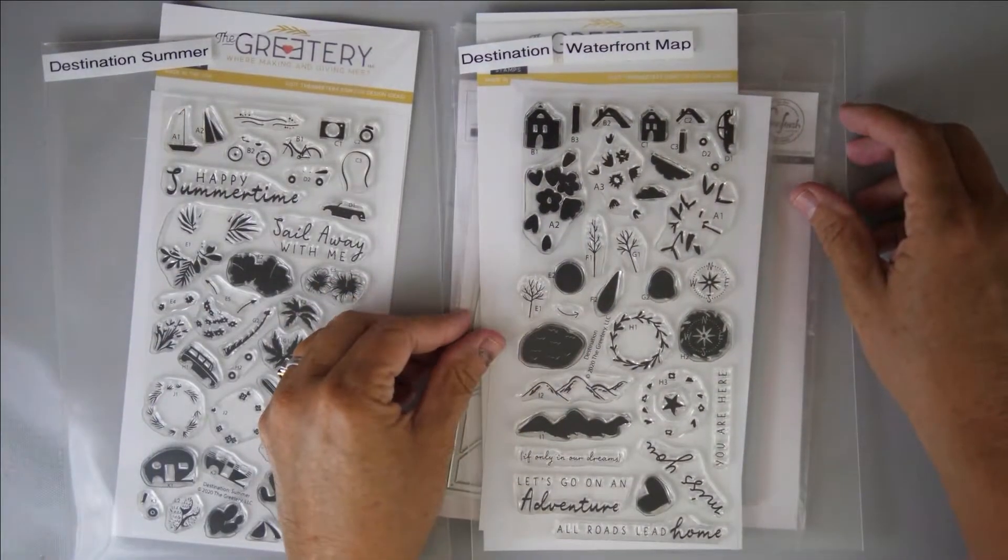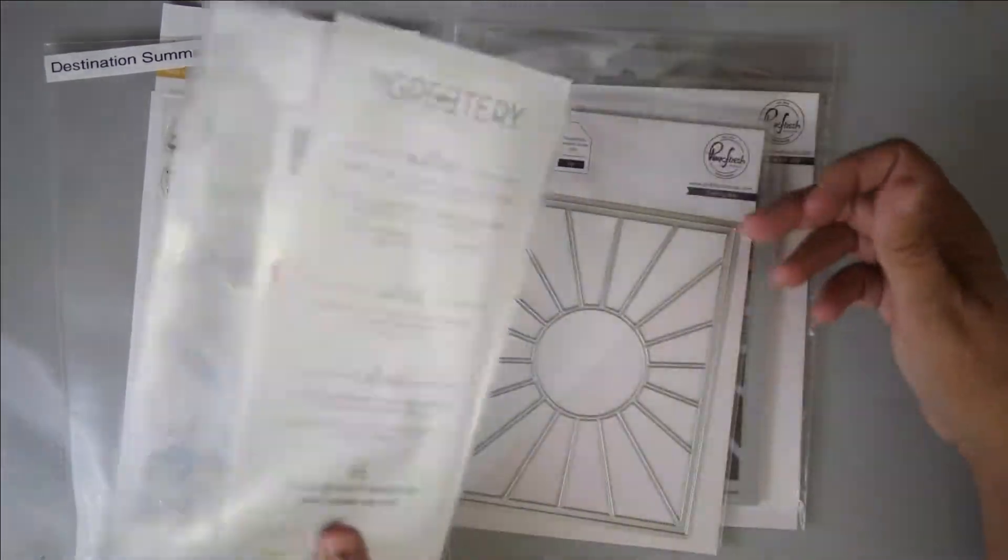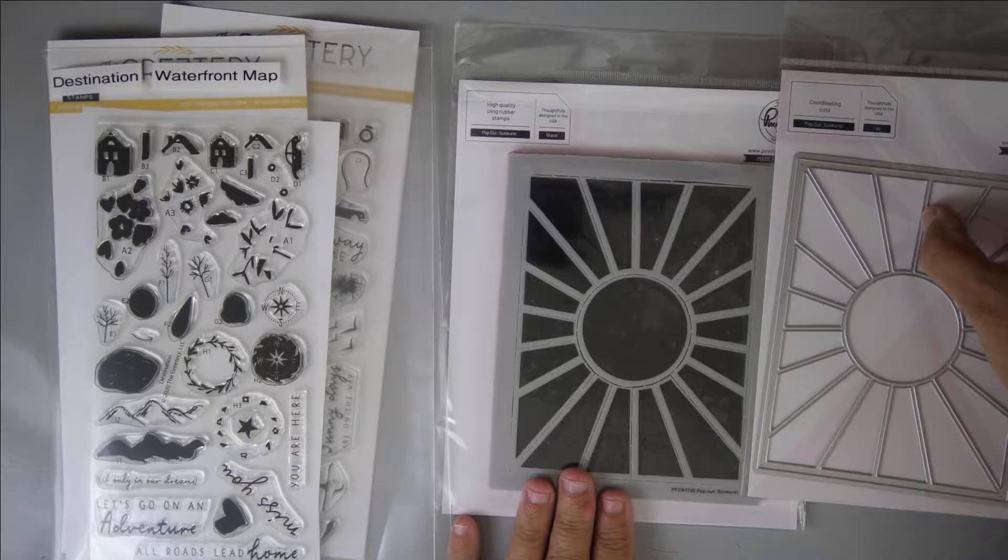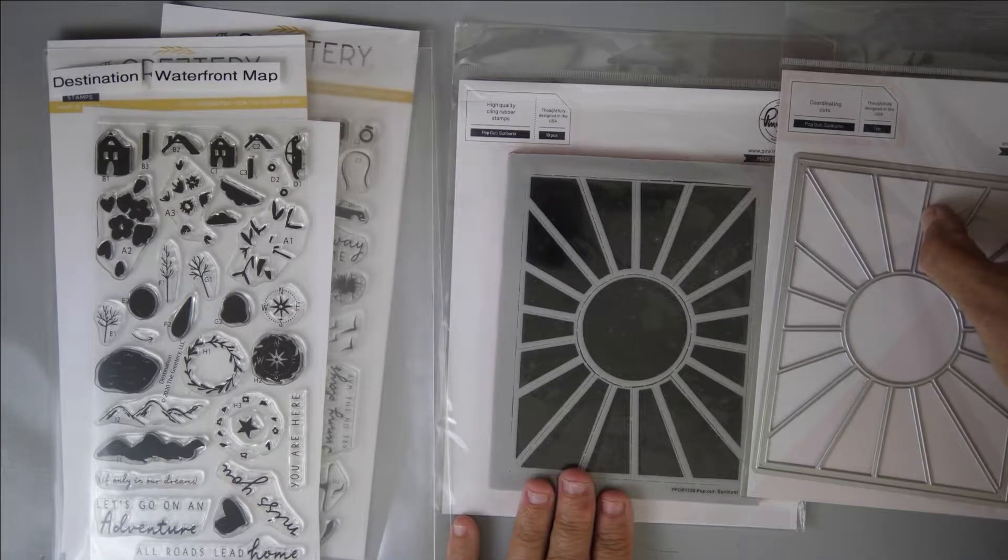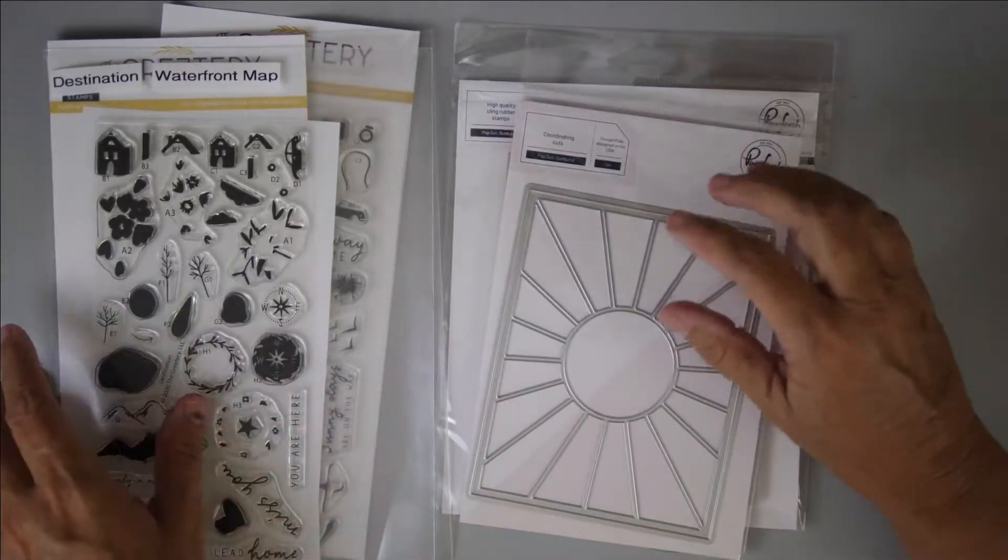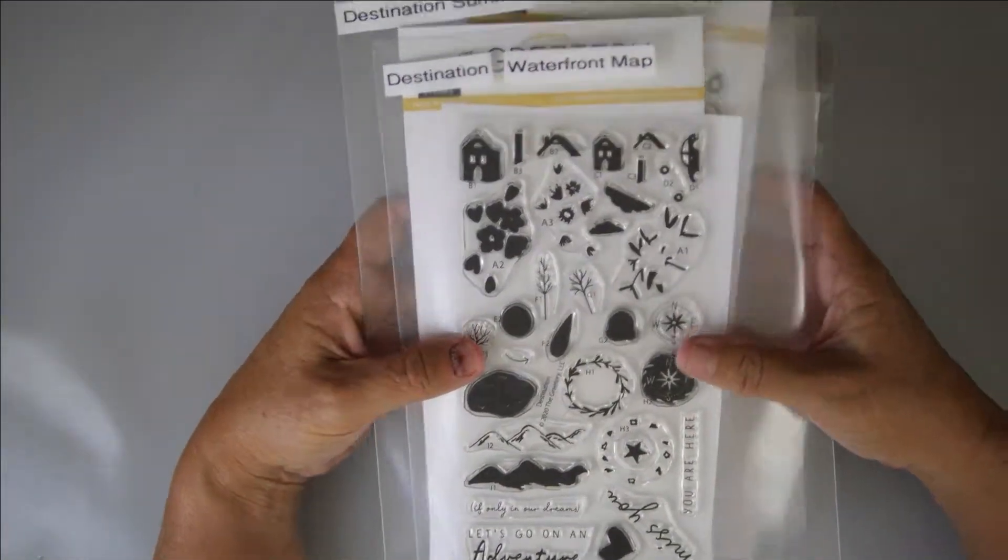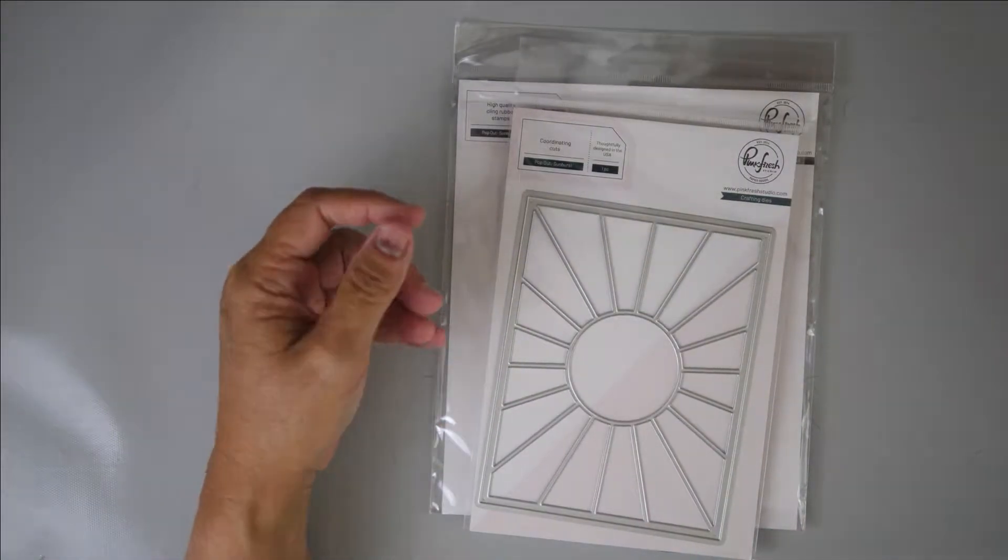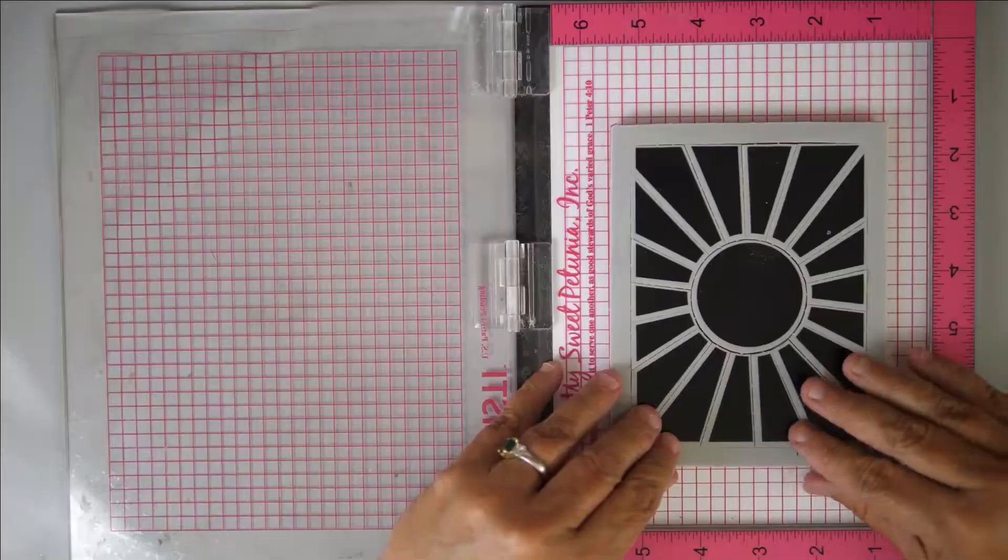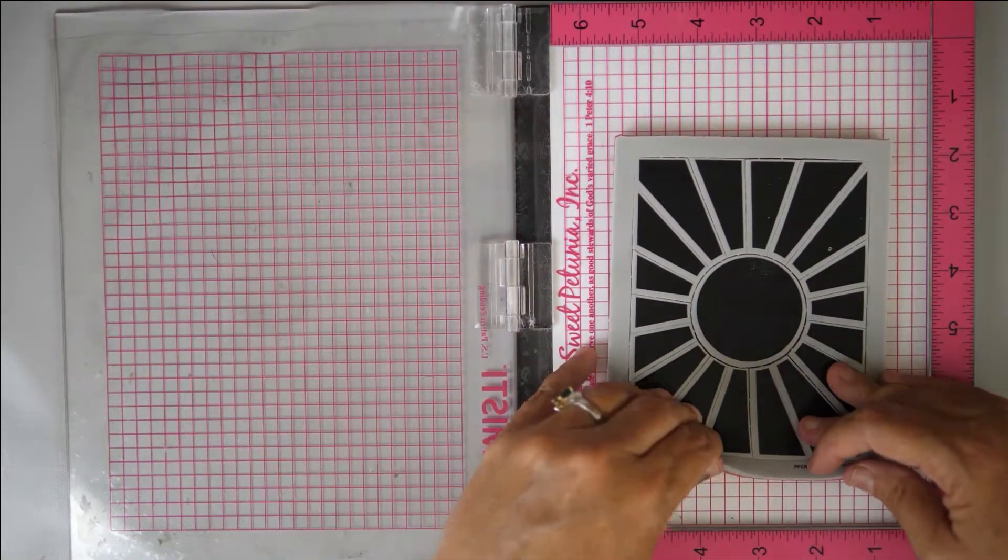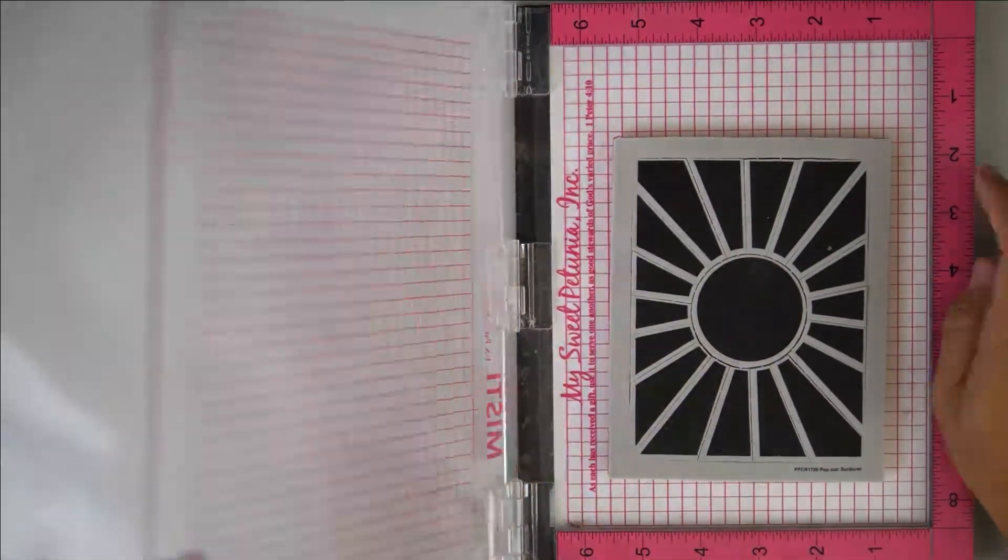This is from their recent release, the Destination Summer and the Destination Stamp Sets. Both have tiny little houses and jeeps and flowers and compass points and all kinds of fun little pieces. I thought that they would make a cute little scene for the center of that Pinkfresh Studio pop-out sunburst stamp and die.